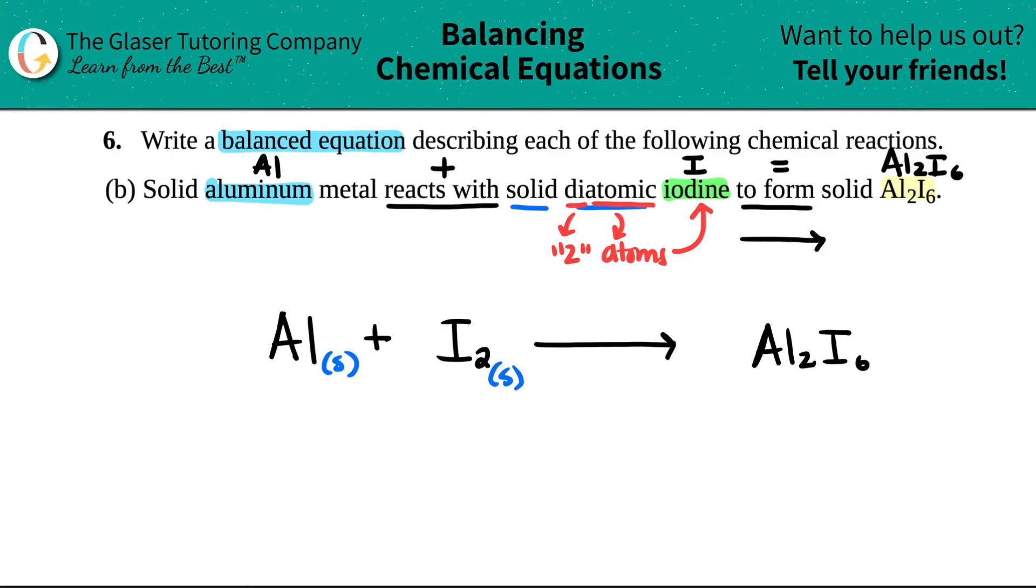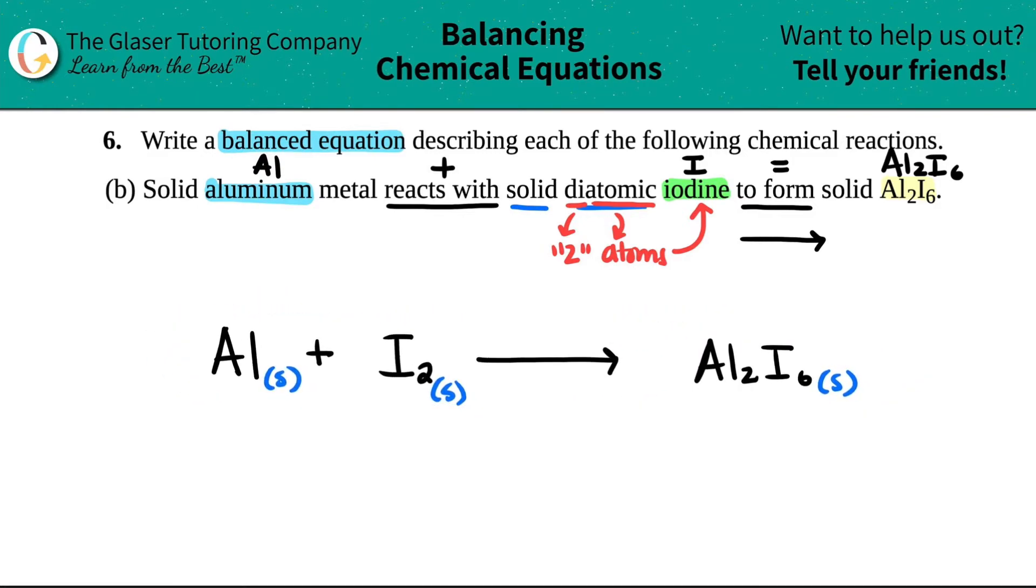So that takes care of that. And now we're forming solid Al2I6. So they told me it was a solid. So there we go. And now I wrote my equation. However, is it balanced? You should always just double check. You can't go forward and you can't do any math that involves balancing equations without having it balanced. So just take a couple of seconds and just look at it to see if it's balanced. We've done the t-chart method by learning how to balance equations. However, let's try to just look at this as a whole and see if we could balance it.